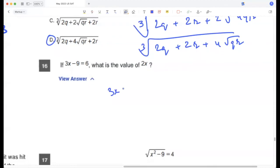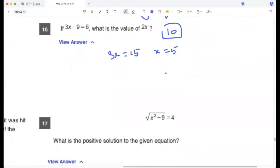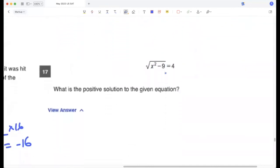Okay, so 3x is 15, so x is 5, so 2x is 10. What is the positive solution? So x squared minus 9 is 16, so x squared is 25, so 5 is the positive solution.